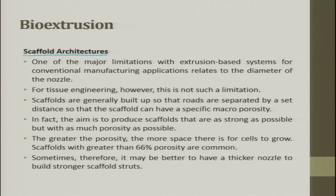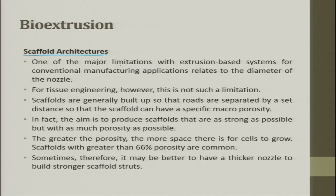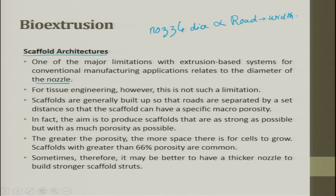Scaffold architecture is another big challenge in rapid manufacturing using these processes in biology. One major limitation of extrusion-based systems relates to the diameter of the nozzle — the nozzle diameter is directly proportional to the road width that is made. Since the material is viscoelastic, it directly determines the width of the road. For tissue engineering, however, scaffolds are generally built so that roads are separated by a set distance to achieve a specific porosity. The challenge in architecture is designing the pores for cell growth.